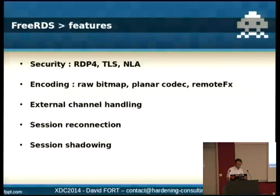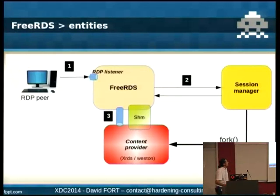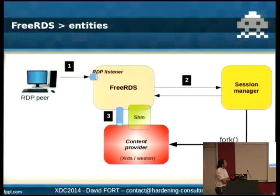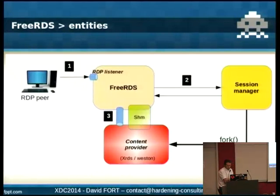So how does it work in FreeRDS? FreeRDS does only RDP. We have FreeRDS that does RDP, a session manager that handles authentication and authorization, and the content provider which creates the content to display. Typically a connection goes like this: the RDP peer connects to FreeRDS, FreeRDS does the RDP negotiation and deals with what the RDP peer wants. We ask the session manager for a content provider, the session manager will fork a content provider, and then we link the two — FreeRDS and the content provider.